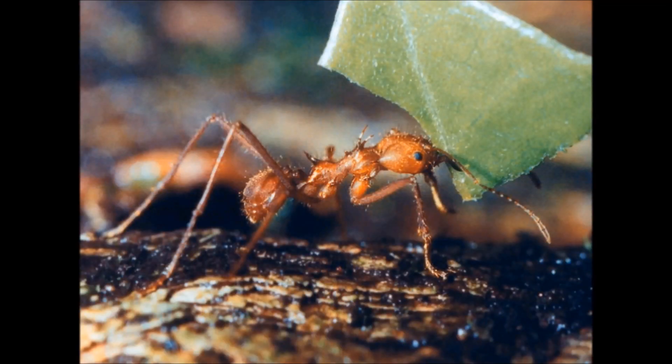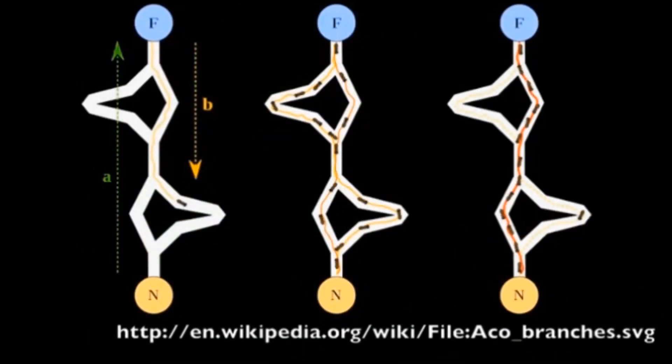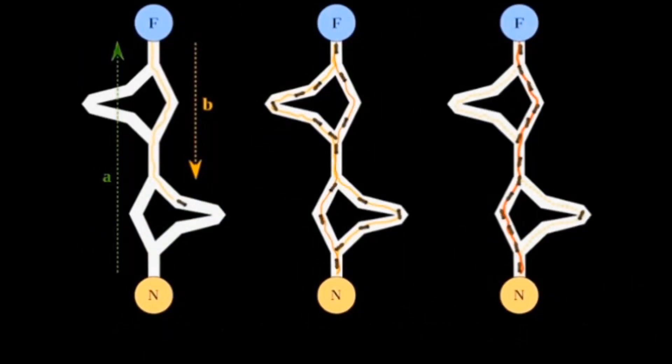Now let's talk about a different way in which ants can help us. In the natural world, ants wander randomly searching for food. Upon finding it, they return to the colony. As an ant walks, it leaves a trail of pheromones. Other ants smell these pheromones and are likely to follow the path taken by the original ant. These ants in turn leave their own trails. Over time, the most efficient trail is reinforced while disused trails evaporate.